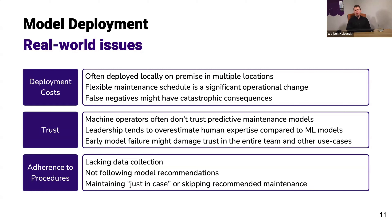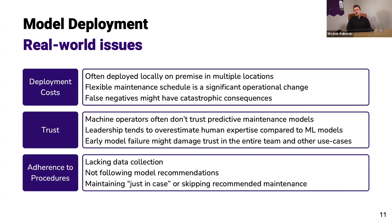There's also a group of issues related to trust, where machine operators don't trust predictive maintenance models. We need to build that trust by showcasing that the model actually works well in the real world before deploying it at scale. Leadership tends to overestimate human expertise compared to machine learning models, even when we have data to show otherwise. We need to show that it works not just in lab conditions but in the real world. Early model failure, if deployed organization-wide, might also damage trust in the entire data science team and other use cases.